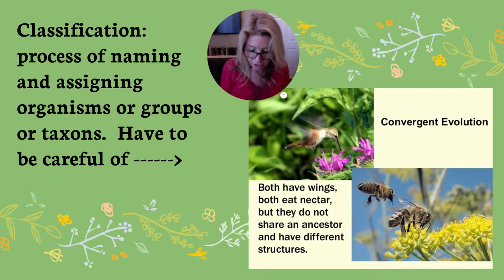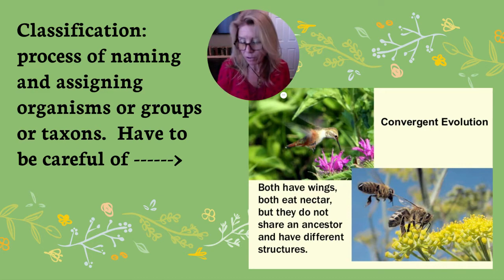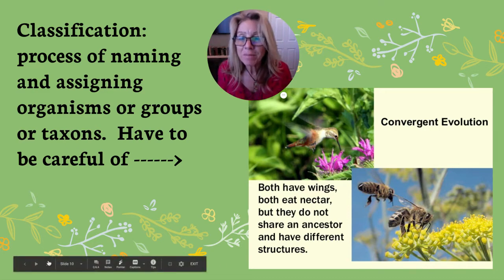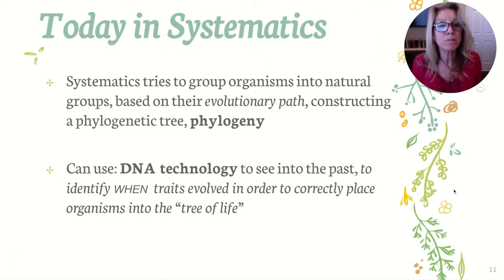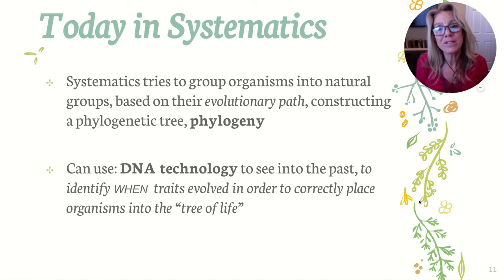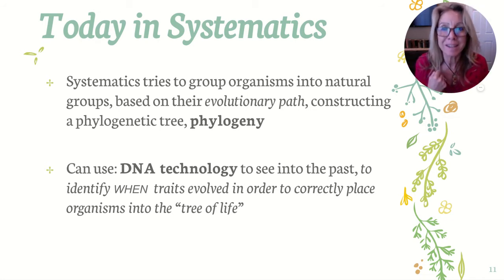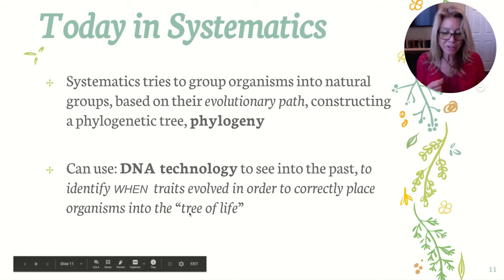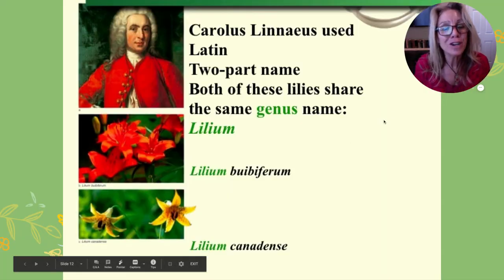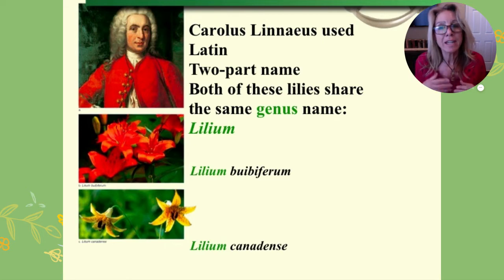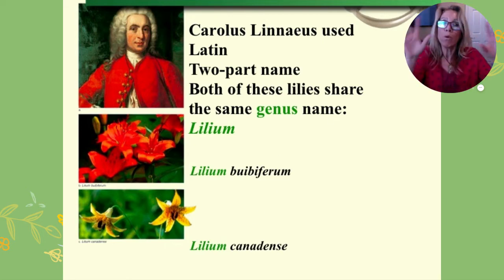So on your classification — the process of naming and assigning organisms — you have to be careful of traits that are a result of convergent evolution. Today, systematics tries to put organisms in their natural groups based on their evolutionary development. You're constructing a phylogenetic tree, and that is phylogeny. You can use DNA technology to look back to see when they diverged from one another in order to correctly place organisms in the tree of life.